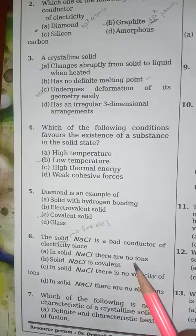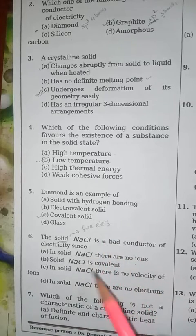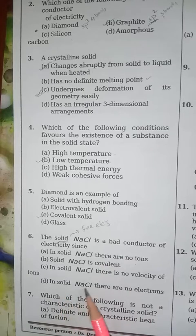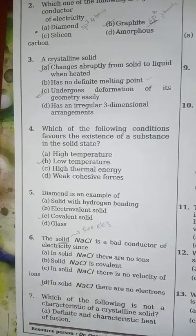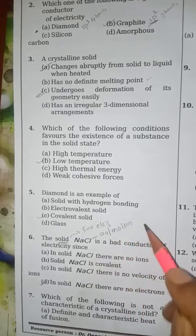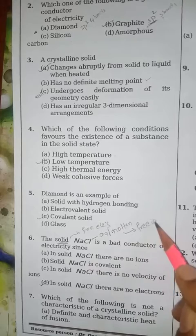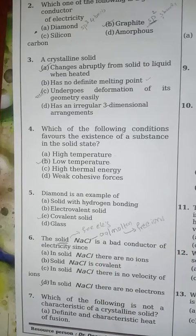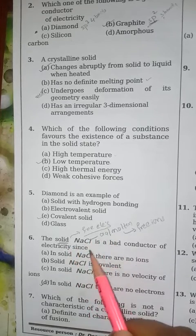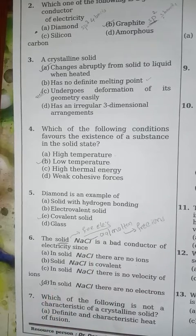In solid NaCl there are no free ions available either. In aqueous or molten state, we need ions for conductivity. Solid NaCl is not covalent — and there is no velocity of ions in solid state. The correct answer is: in solid NaCl there are no free electrons. However, the same NaCl in aqueous or molten state exhibits conductivity because Na⁺ and Cl⁻ ions are available as free ions.